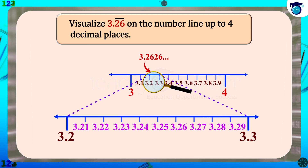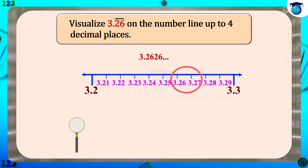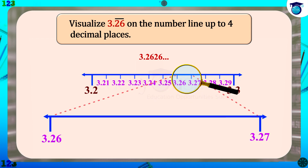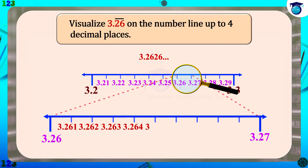3.262 is in between 3.26 and 3.27. Divide the distance between 3.26 and 3.27 again into 10 equal parts, and mark each part as 3.261, 3.262, etc. up to 3.269.